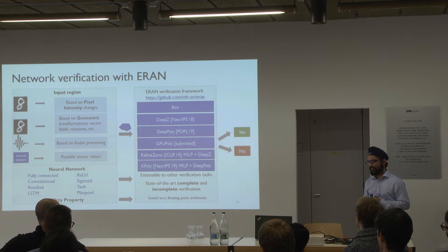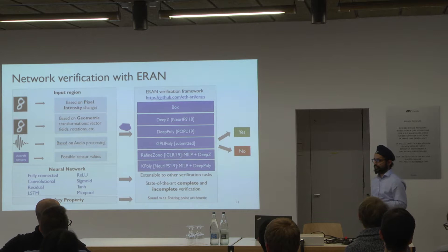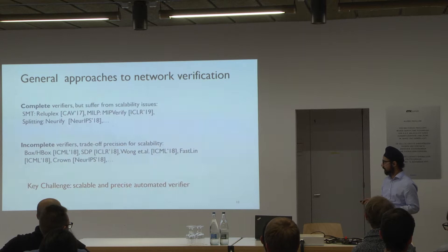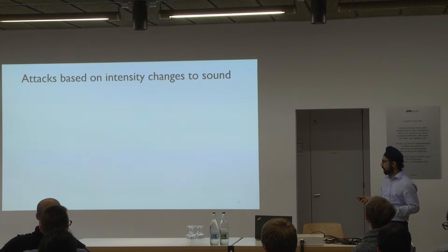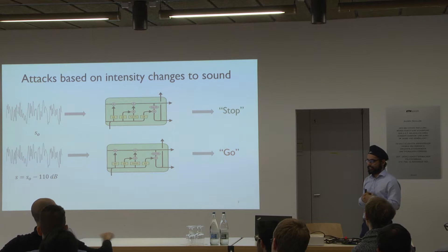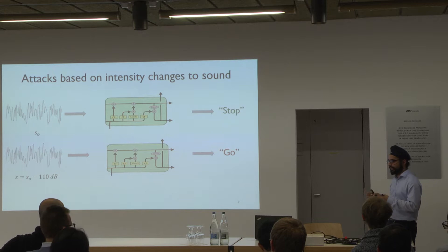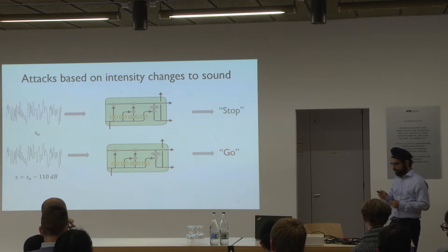Q: You mentioned LSTMs — can you elaborate on what you've tried with LSTMs? A: LSTMs are being used for sound and text classification. In our audio verification example, you have an LSTM for recognizing audio signals, and you perturb the input signal by a small amount — in this case, 110 decibels. In terms of abstract domains, we have the DeepPoly domain and build custom transformers for handling the nonlinearities in LSTMs, like the composition of tanh and sigmoid.